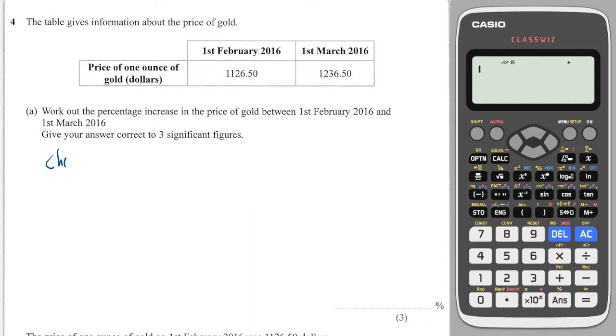It says work out the percentage increase of the price of gold. Percentage increase is best found by doing change over original times by 100. So in that case I would do the large amount minus the smaller amount and then all over the original amount, which will be the amount in February.